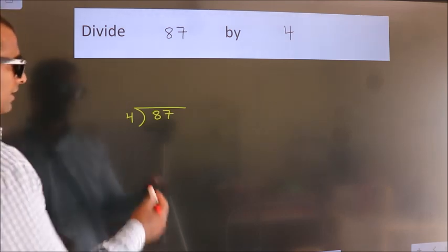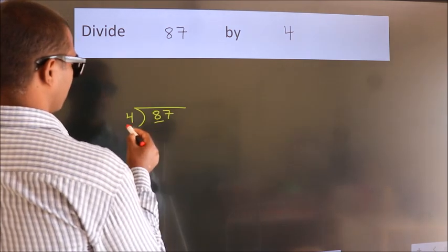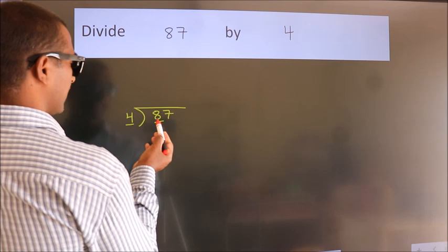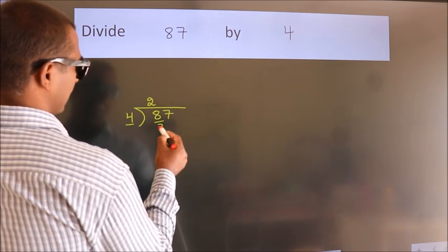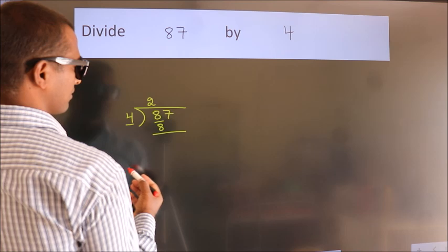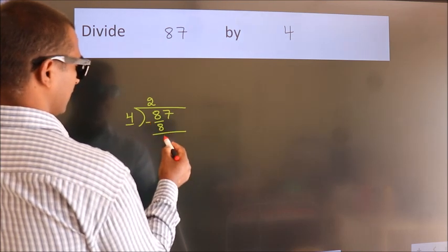Next. Here we have 8, here 4. When do we get 8 in the 4 table? 4 2's are 8. Now we should subtract. We get 0.